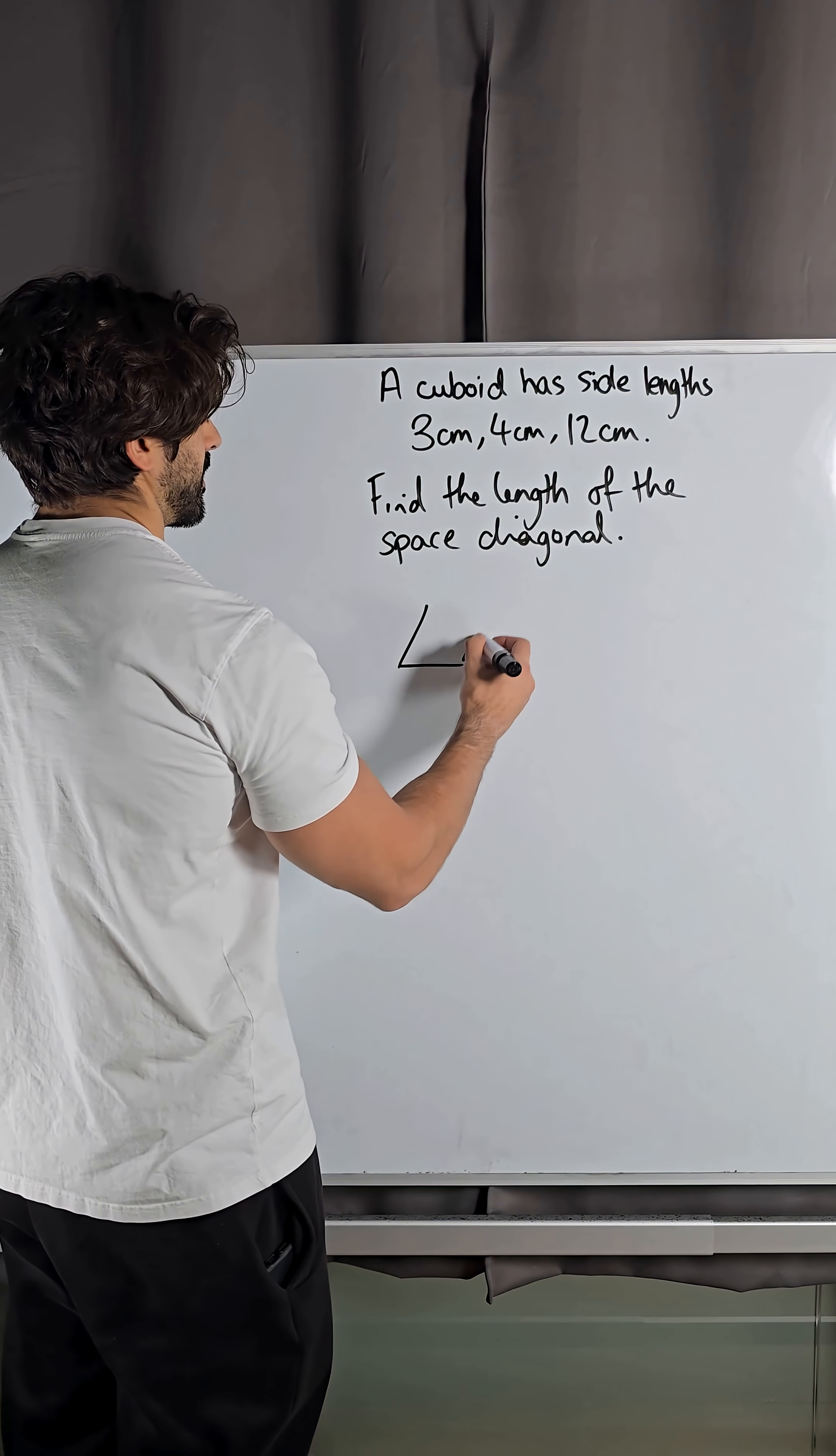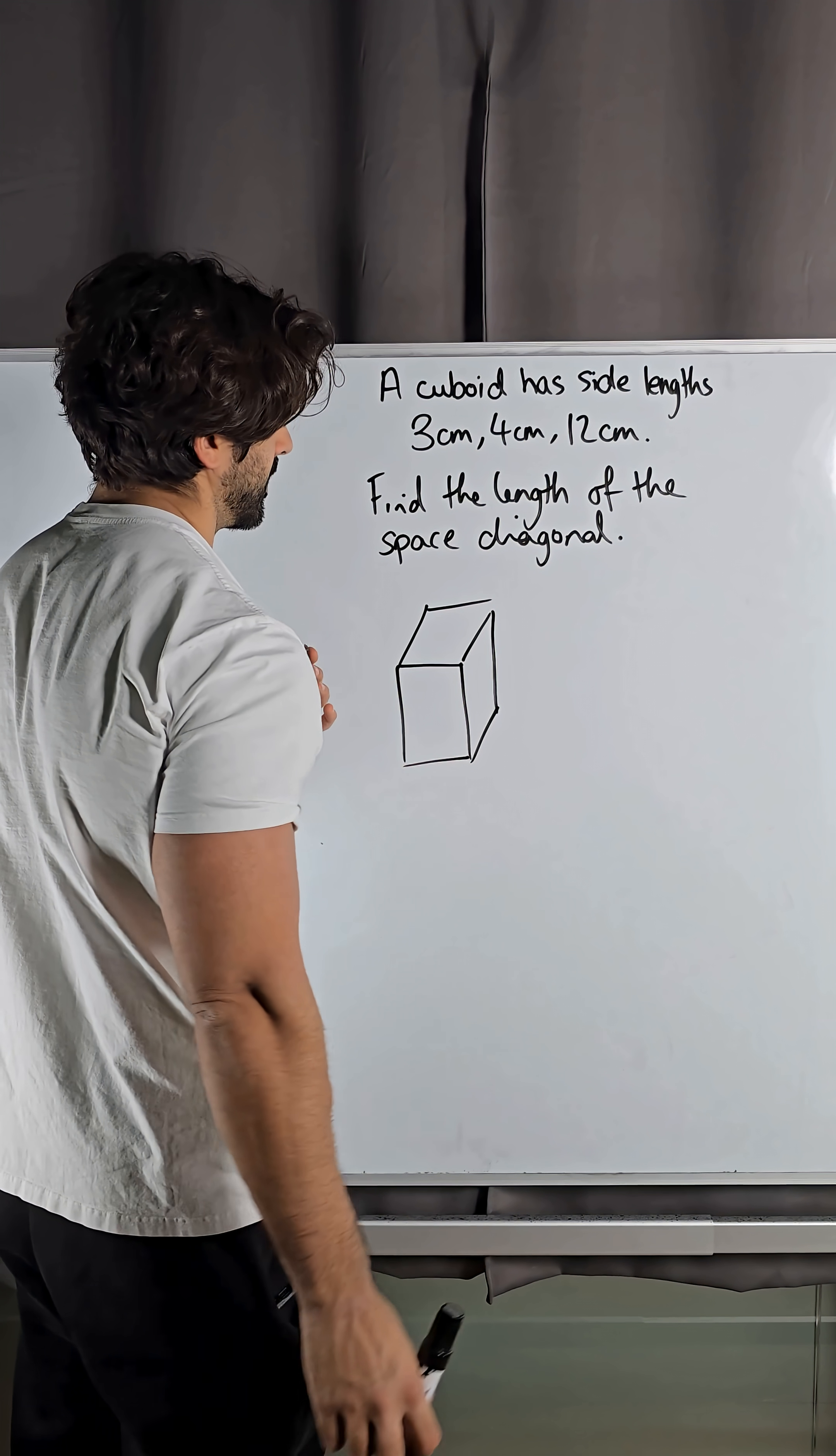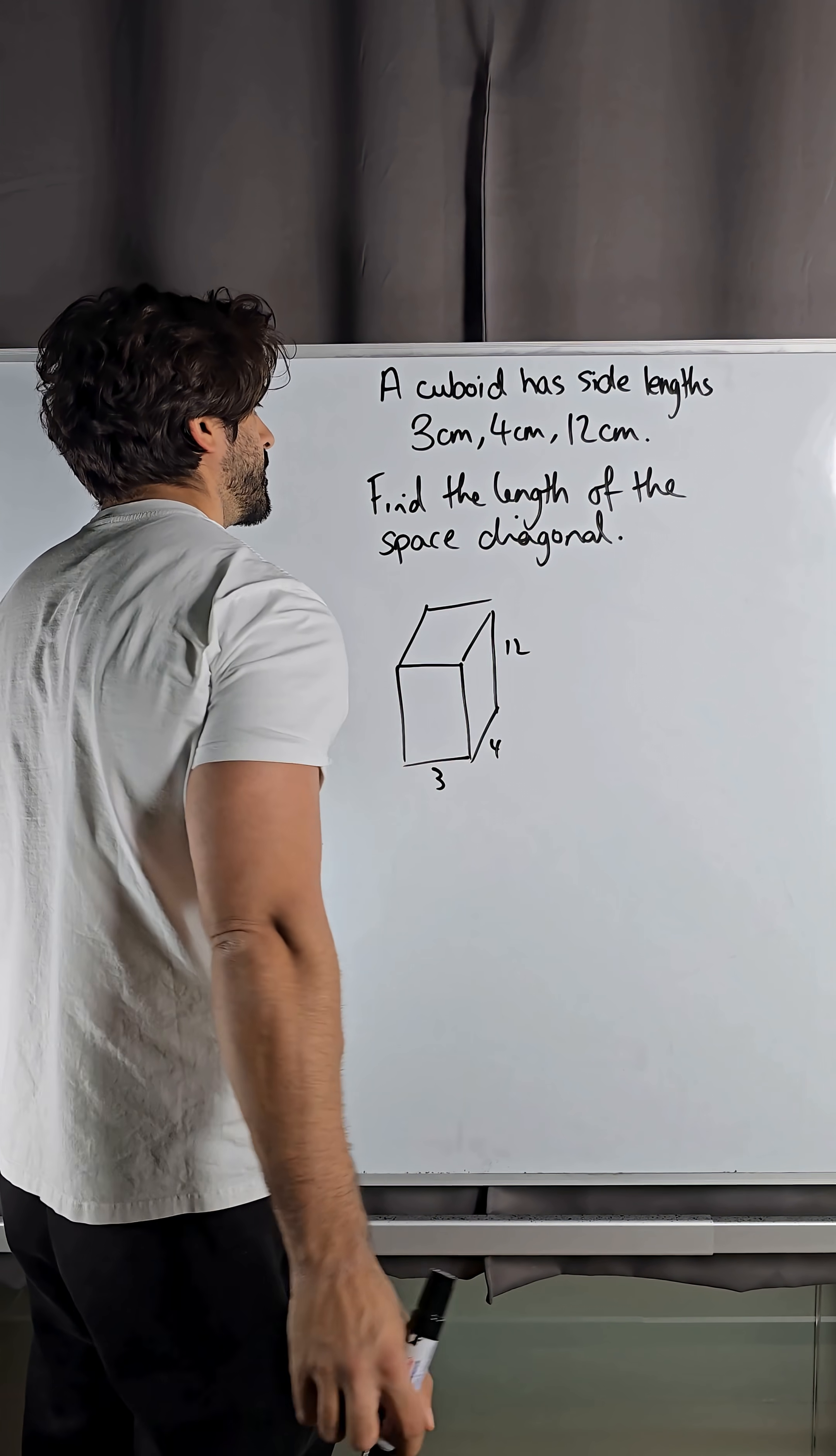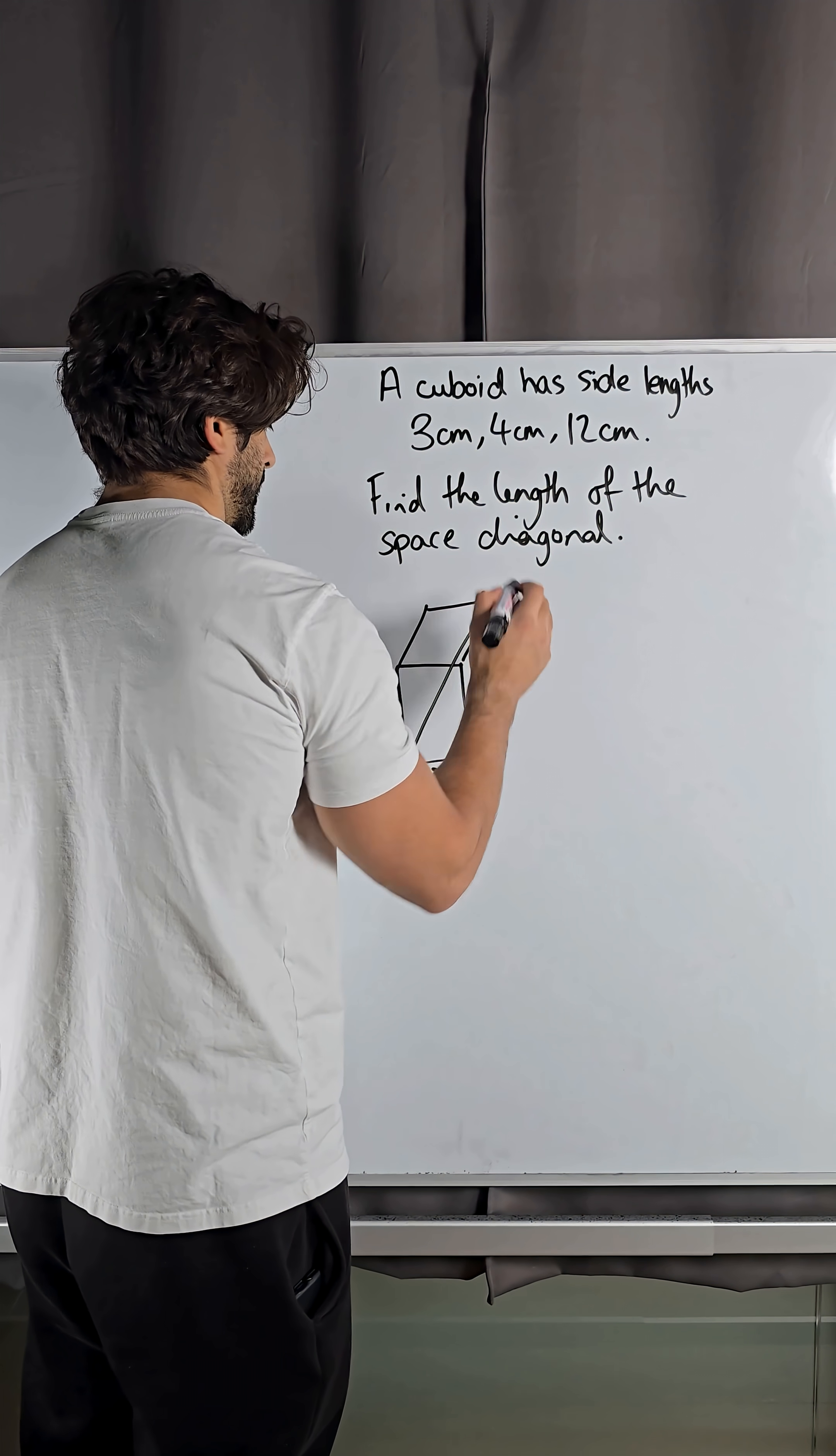So we have this cuboid like this, we have 3, we have 4 and 12. The space diagonal is going from corner to corner like that.